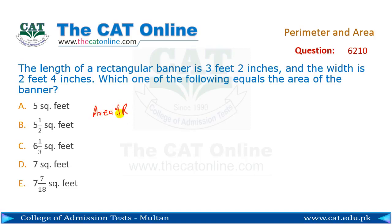Area of rectangle is equal to the product of adjacent sides. So this means the required answer is 3 feet 2 inches multiplied by 2 feet 4 inches.